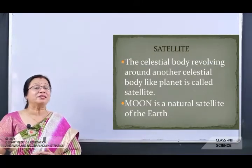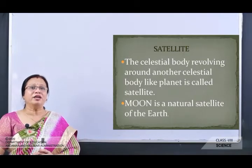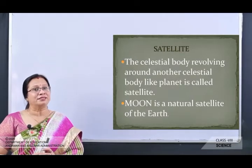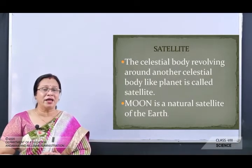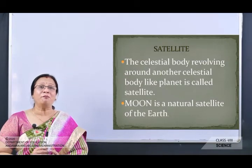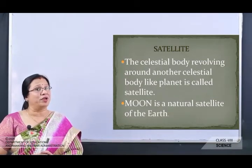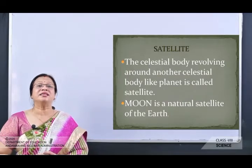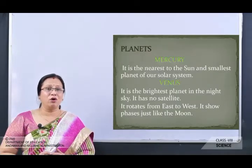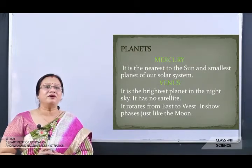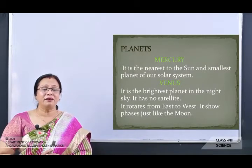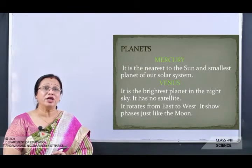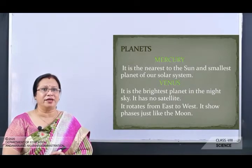The next topic is satellite. The celestial body revolving around another celestial body like a planet is called a satellite. Satellites are bodies that revolve around planets, for example the moon. Moon is a natural satellite of the earth. The first planet is Mercury, then Venus, then the Earth.